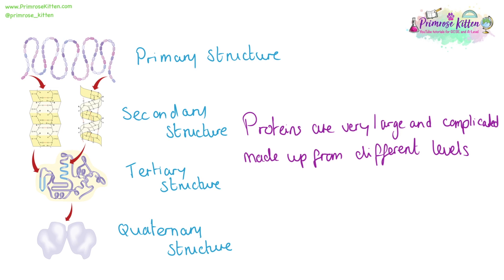Occasionally you might see primary, secondary, and tertiary written as numbers with a dot over the top of them. This is just a common shorthand and means primary, secondary, tertiary, and quaternary.